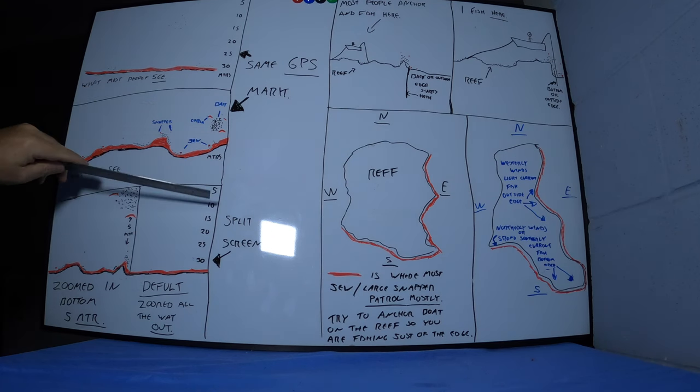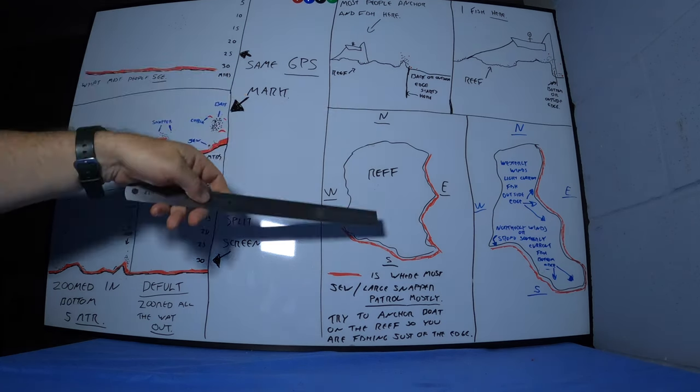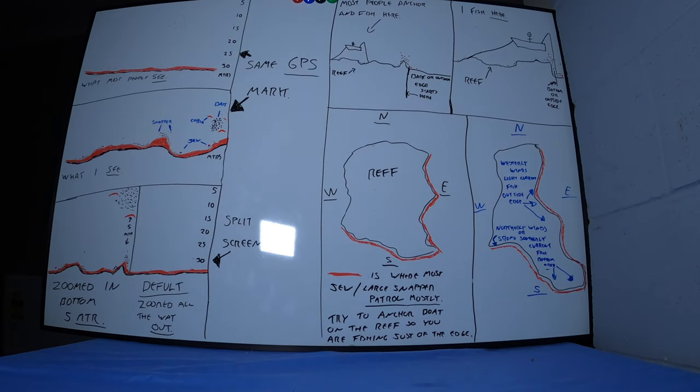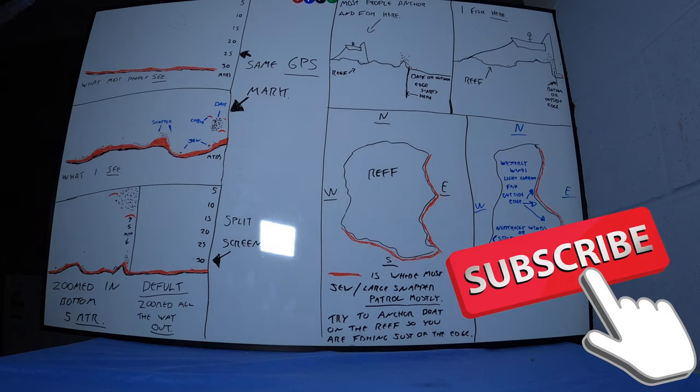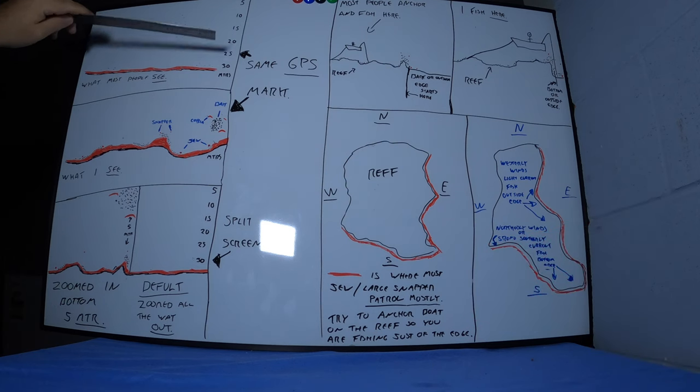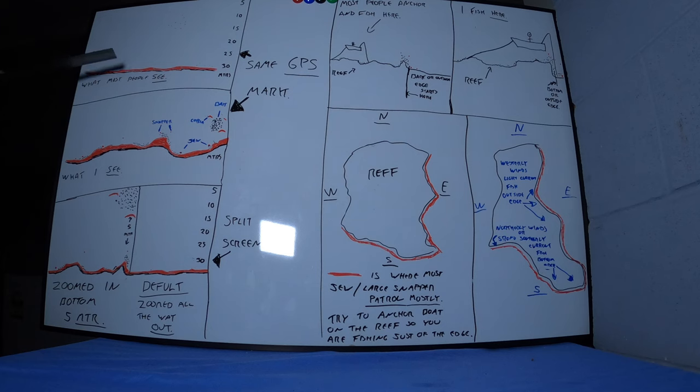You can see the board in front of you. On one side here is sounder, same GPS marks but what I look for. Then on the other side, I'll discuss how or where I anchor when I'm fishing offshore, especially live baiting or float lining for big snapper and Jews and Cobia.